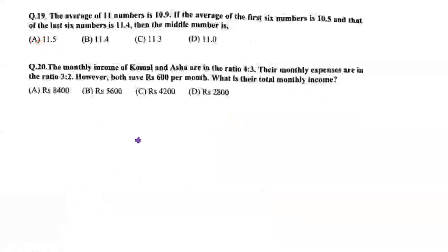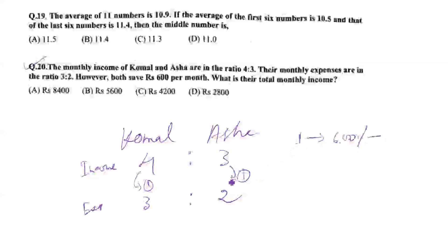Question 20. The monthly income of Kumal and Asha are in the ratio of 4 is to 3. Their monthly expenses are in the ratio of 3 is to 2. Both save 600 per month. What is their total monthly income? The income ratio is 4:3, so the total is 4 plus 3 equals 7. With each saving 600, we multiply 7 by 600 to get 4200. The total income is 4200.